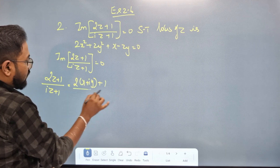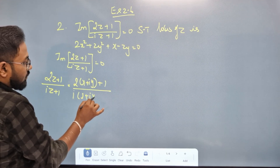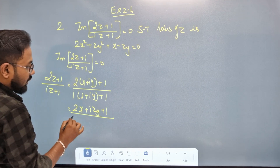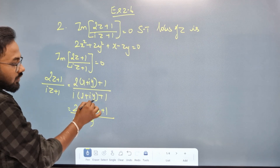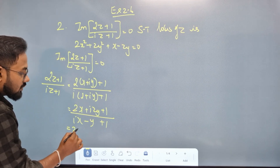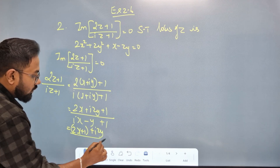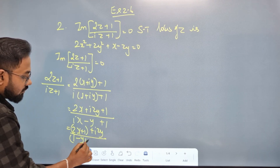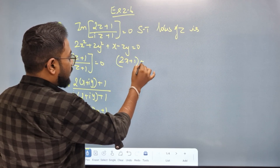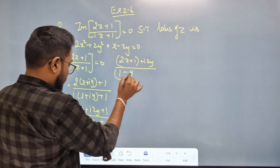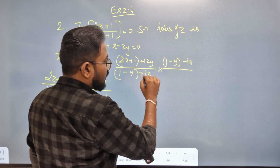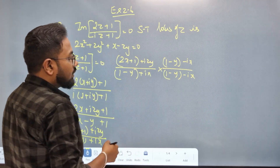Substituting: (2x + i·2y + 1) divided by (ix minus y + 1), since i² = −1 so iz gives i times iy = −y. So the denominator becomes (1 − y) + ix. Now multiply numerator and denominator by the conjugate (1 − y − ix).